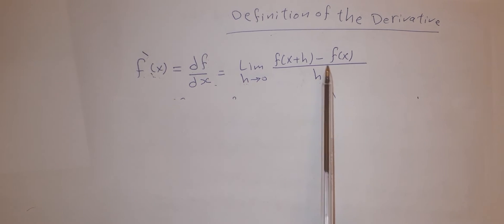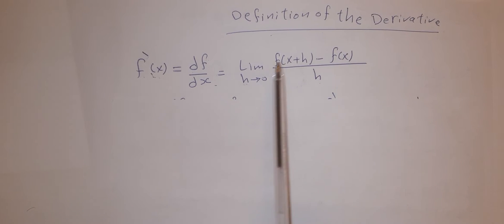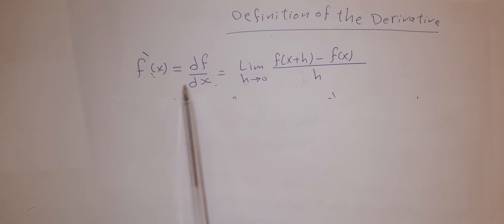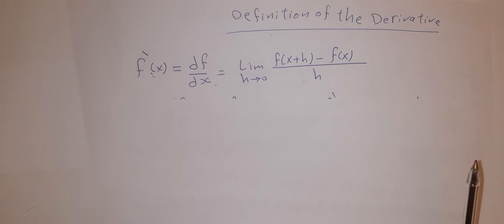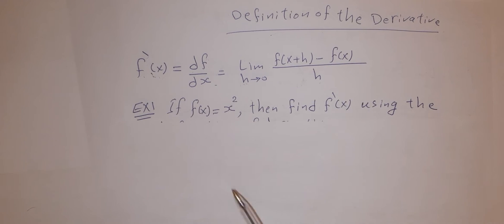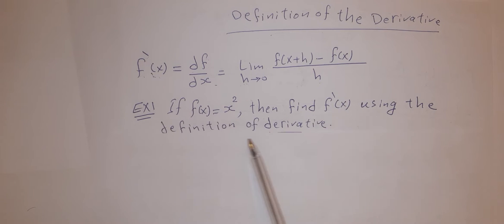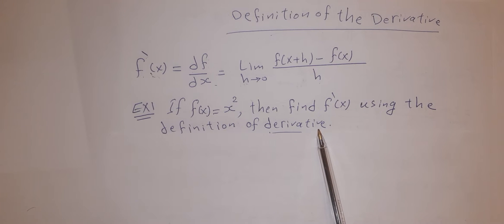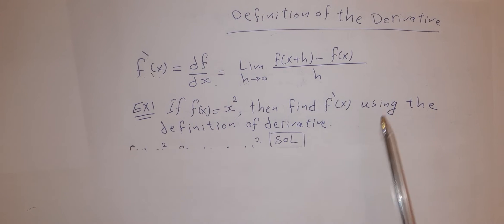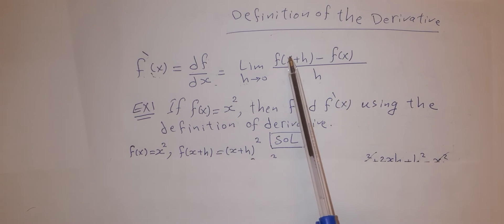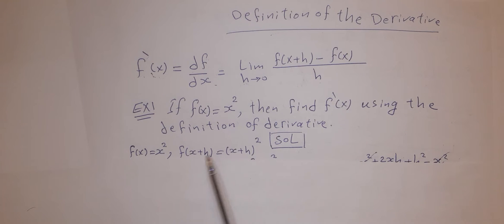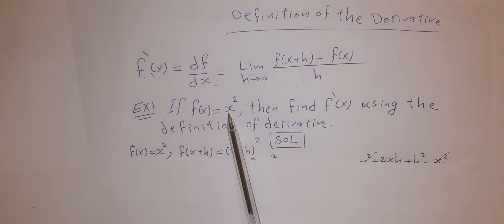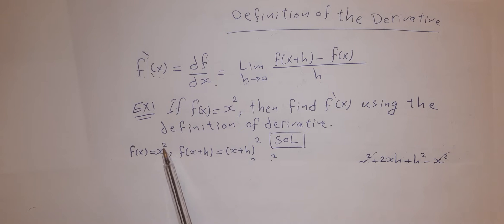We have a function f(x) that changes to f(x+h), and we find the rate of change using this rule. For example, if f(x) = x², find f prime of x using the definition of derivative. Step one: write f(x) = x², and f(x+h) = (x+h)².